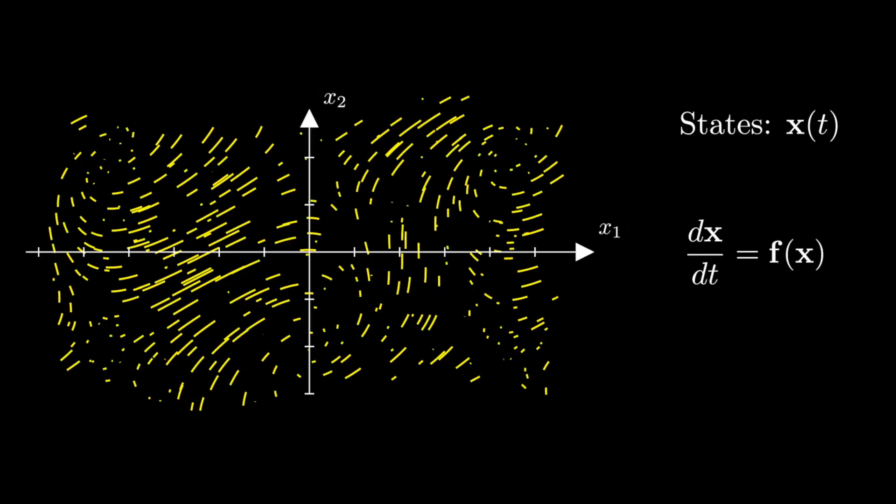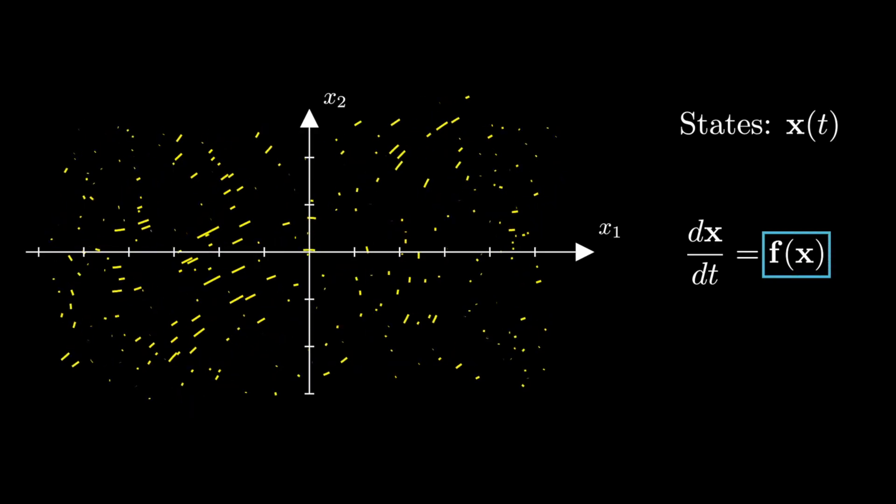How states vary over time is determined by the dynamics, F, which defines the instantaneous rate of change of the states.